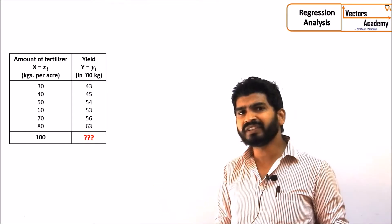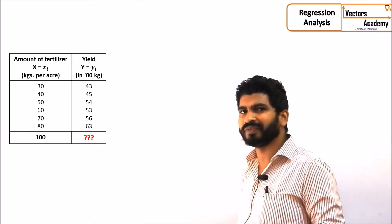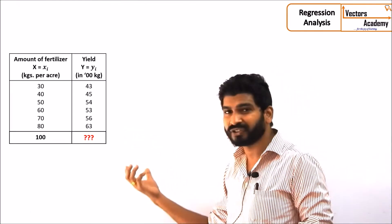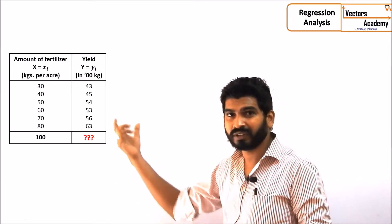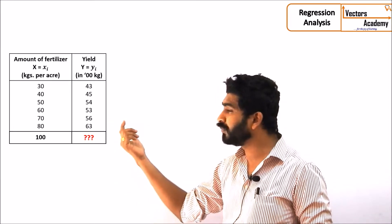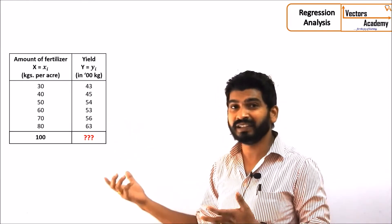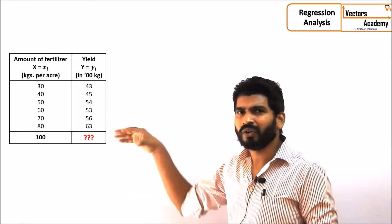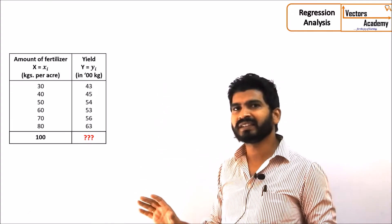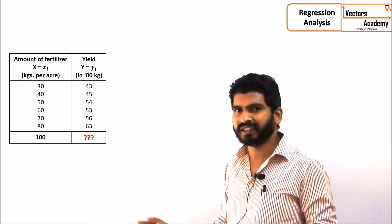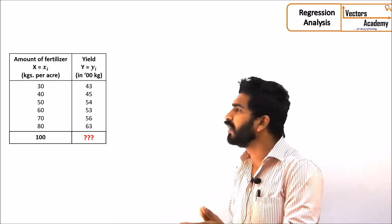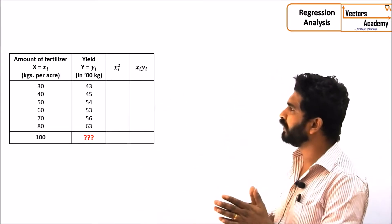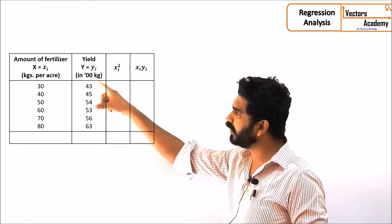Regression analysis can be of different types. It can be a linear regression equation. The equation between two variables can be linear or it can be quadratic and so on. But here we are just concerned with a linear relation. Let us see how to find out the relation between two variables.